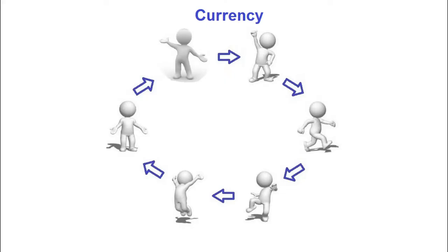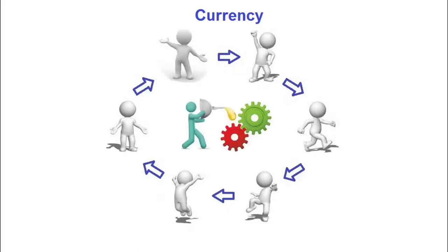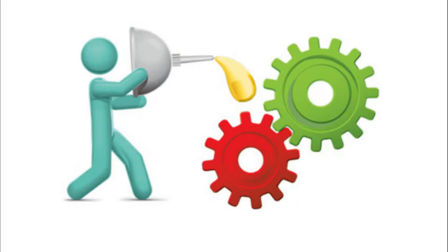Finally the customer comes down the stairs, takes back the banknote, and leaves. The visitor's single banknote was enough to settle five debts. When there is no currency circulating, or not enough, the economy is blocked. Currency can be seen as the oil in the wheels of the economy.